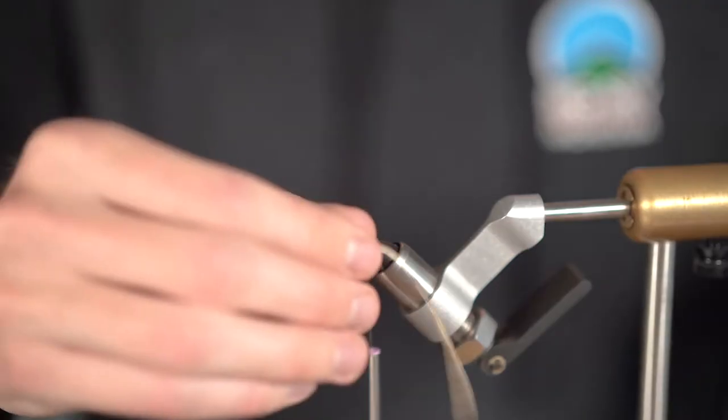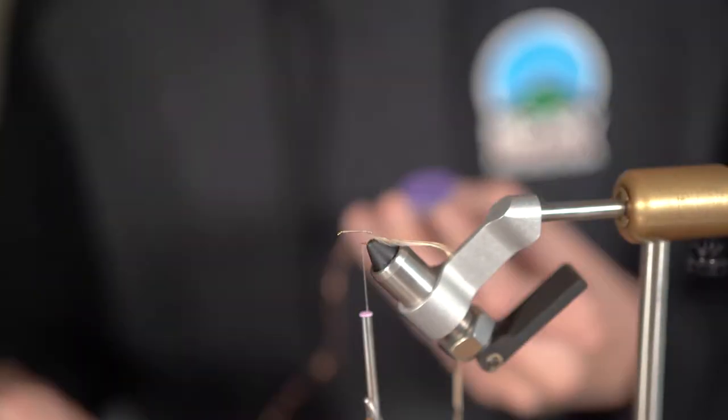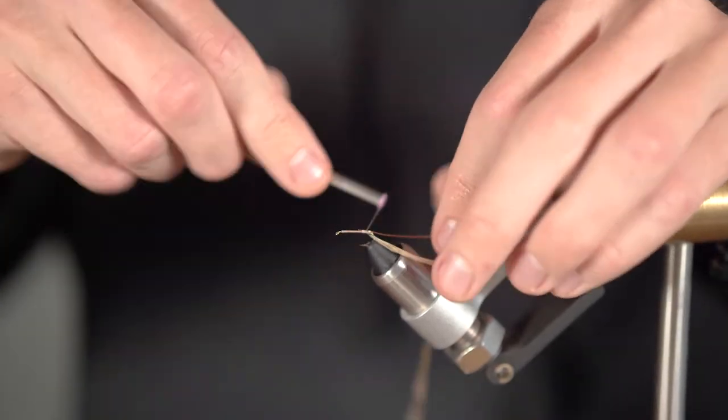Then grab out your saddle of hackle and cut off a piece that is small enough for a size 14 hook and tie that in at the back. Next grab out the copper wire and cut out a piece 1-2 inches in length and tie that in next to the hackle.